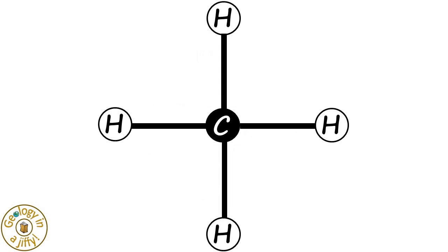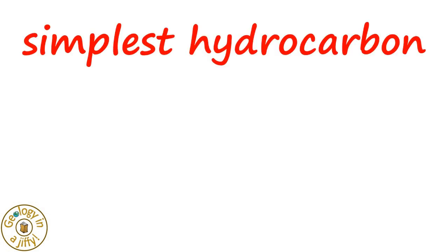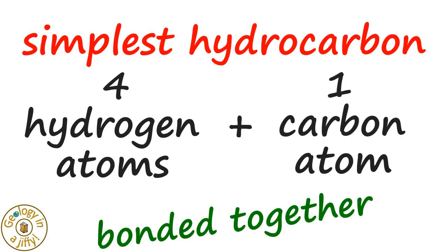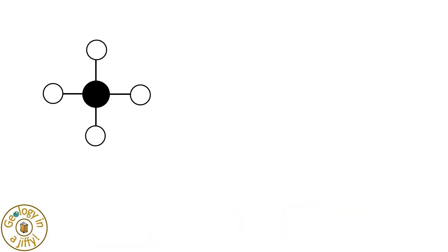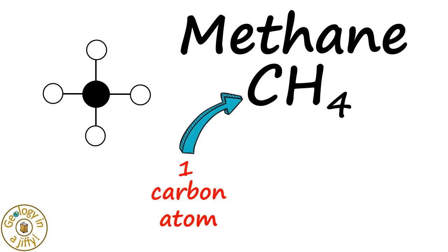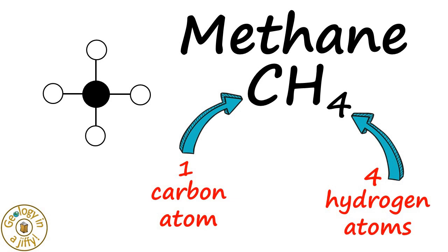If we then simplify this diagram to being a ball and stick diagram, then remove the letters H and C, the result is this diagram, a diagram of the simplest hydrocarbon. This is clearly made up of four hydrogen atoms and one carbon atom, all bonded together. This is a model of methane, the simplest hydrocarbon, which has the formula CH4, the symbols denoting that methane is made of one carbon atom and four hydrogen atoms.